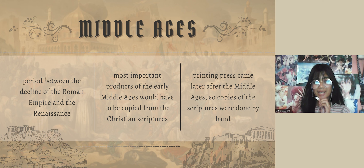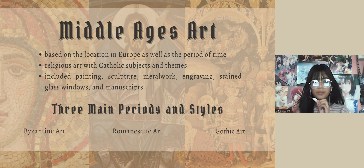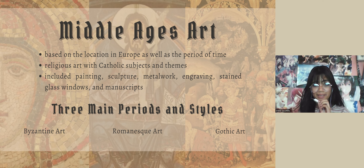As for the Middle Ages Art, they were mostly painting, sculpture, metalwork, engraving, stained glass windows, and manuscripts, having religion as its main theme. The Middle Ages Arts have three main periods: namely the Byzantine Art, Romanesque Art, and the Gothic Art.